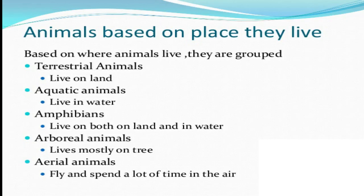First one is terrestrial animals. Animals that live on land are called as terrestrial animals. Examples of terrestrial animals include tiger, lion, elephants, dogs, cats, and camel.